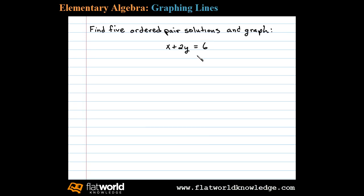Here we're asked to find five ordered pair solutions and graph. Let's begin by solving for y. We can isolate the variable term 2y by first subtracting x on both sides. 2y then will equal negative x plus 6.